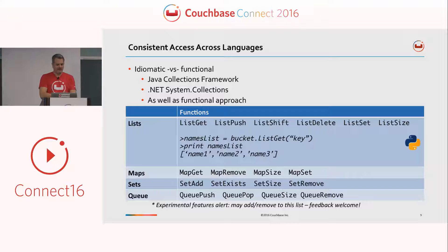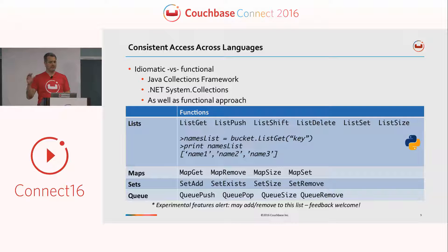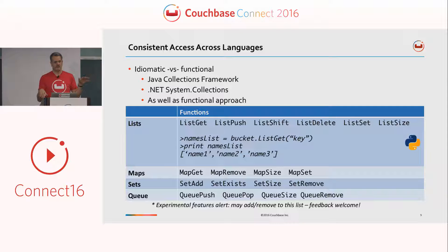We have consistent access across all languages. Where our function names are all aligned, our approach to changing and updating and getting information through these data types are all consistent as well. We've got two different approaches: a functional approach where we have some functions you can use, and if you're using .NET or Java collections, you can use those specific frameworks the way that you normally would.